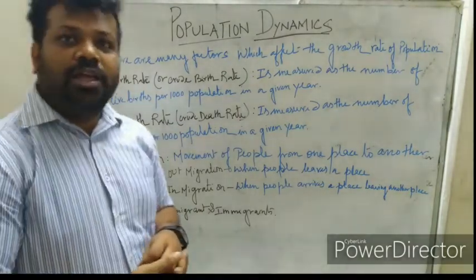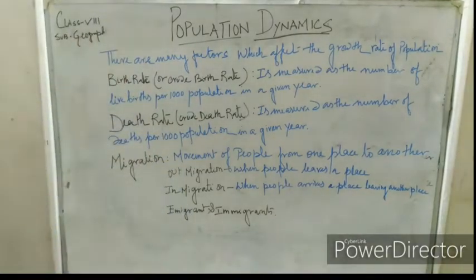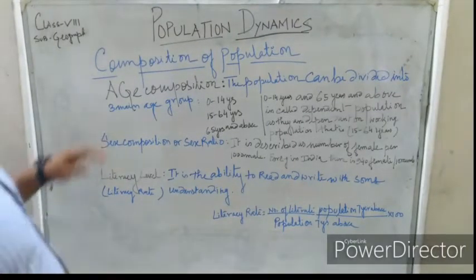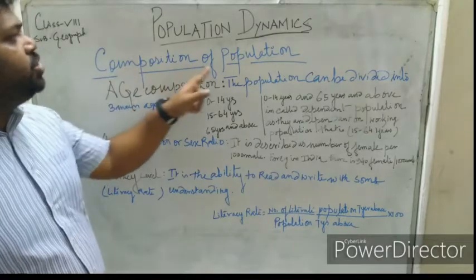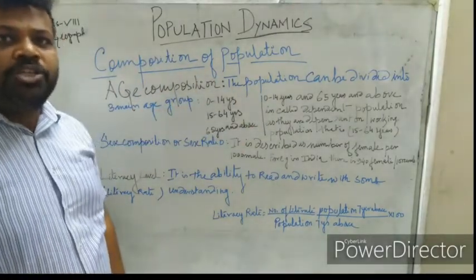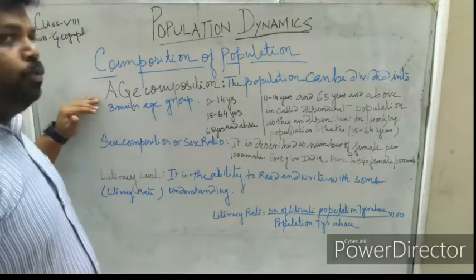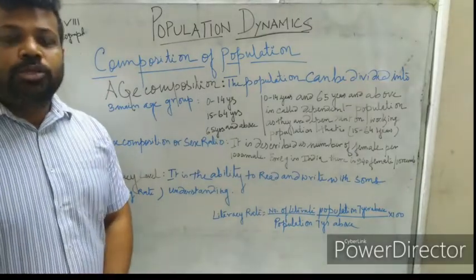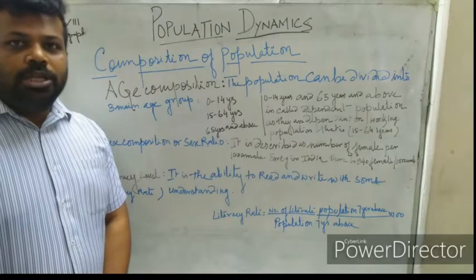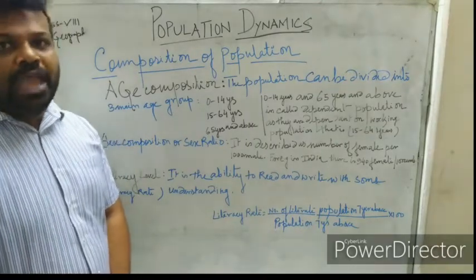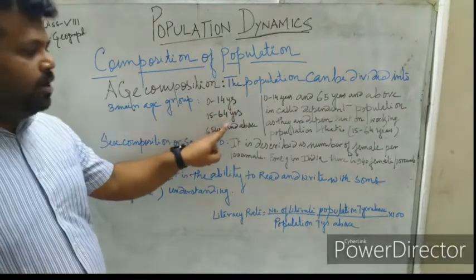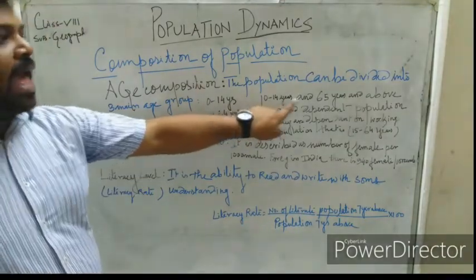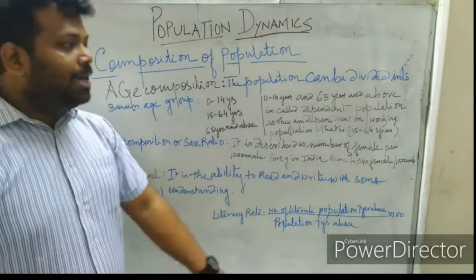Next, we will go to the composition of the population. To understand the composition of the population, we start with age composition. The population is composed of people of different ages, grouped into three main age groups: 0 to 14 years, 15 to 64 years, and 65 years and above. The groups 0 to 14 and 65 years and above are called the dependent population.